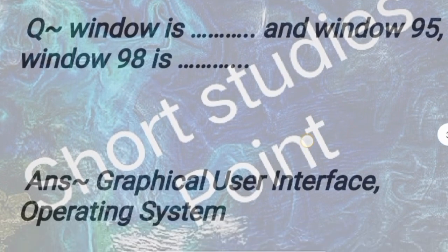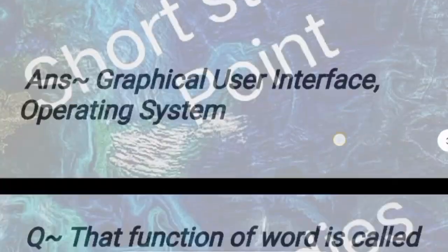Next question: Windows is a graphical user interface, and Windows 95, Windows 98 is an operating system.